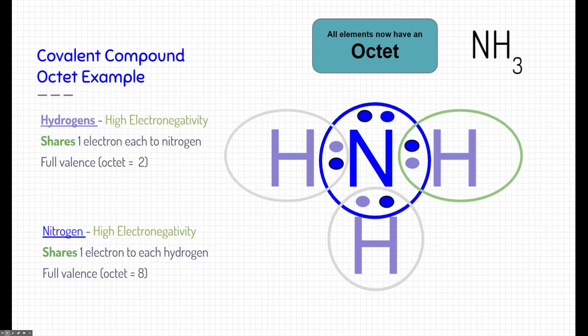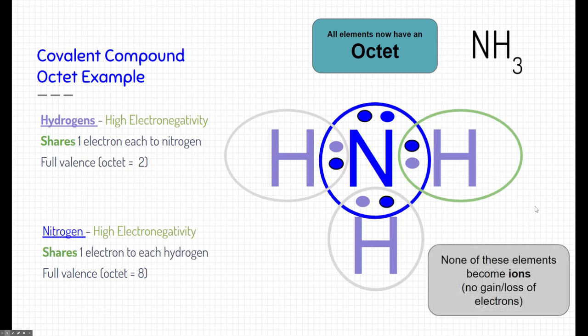This is the covalent compound formula for this covalent compound NH3. None of these elements, by the way, became ions. Because they're not gaining or losing electrons, technically, they don't ever become charged. So we're not writing charges here. They're sharing electrons and double-dipping on those electrons.